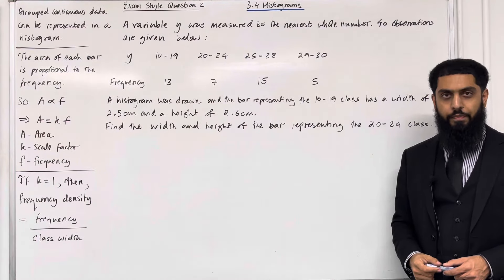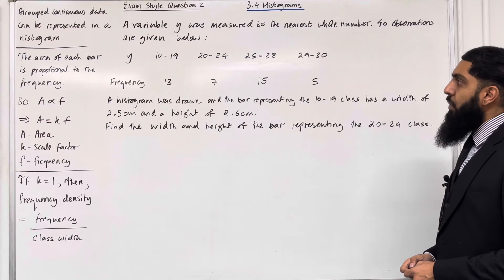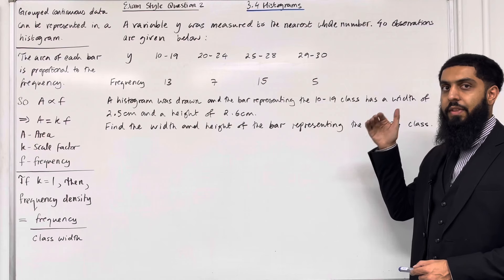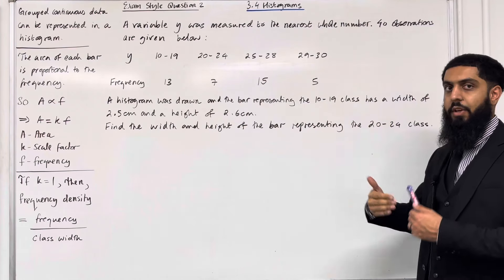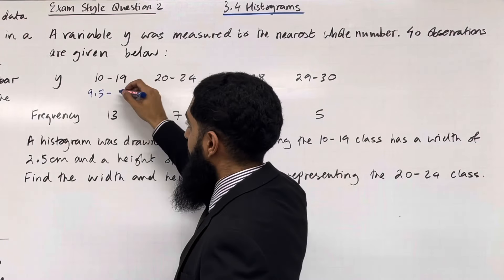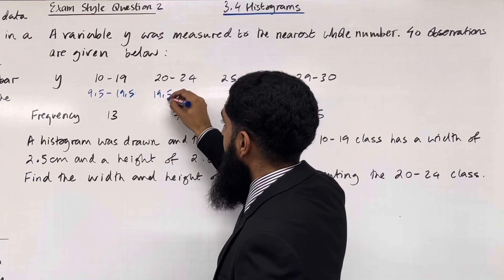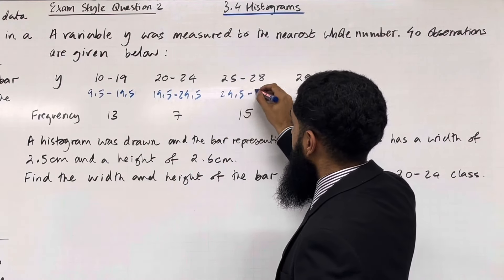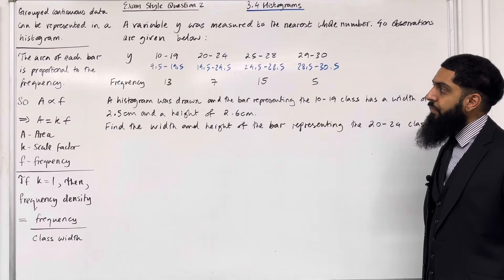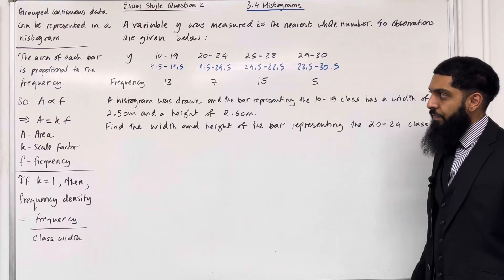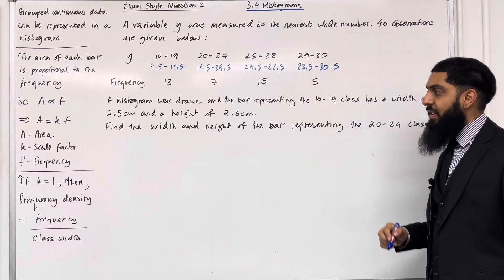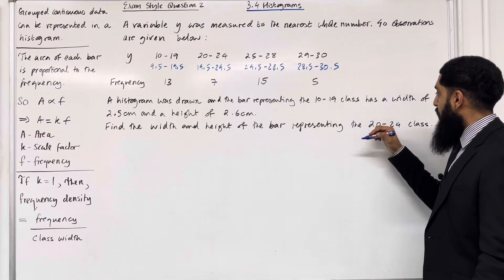Let's look at exam-style question 2. A variable y was measured to the nearest whole number and 40 observations are given. We have class intervals for y and the frequency of each. The data has gaps, so we must rewrite each class interval in class boundary form: 9.5 to 19.5, 19.5 to 24.5, 24.5 to 28.5, and 28.5 to 30.5. A histogram was drawn, and the bar representing the 10 to 19 class has a width of 2.5 cm and a height of 2.6 cm. Find the width and height of the bar representing the 20 to 24 class.